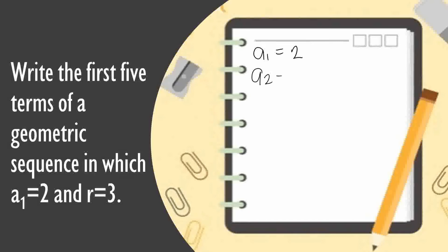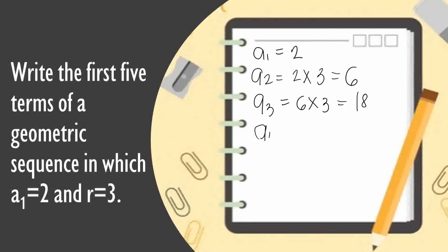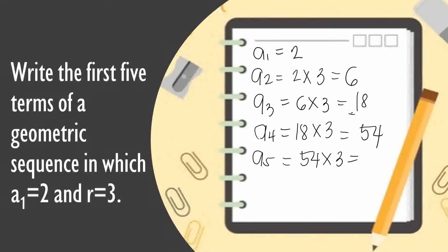So a sub 2 is equal to 2 times 3, which is 6. Then a sub 3, multiply the previous number 6 by 3, which equals 18. Then a sub 4, 18 times 3 equals 54. And a sub 5, 54 times 3 equals 162. So these are the first 5 terms of the geometric sequence with a sub 1 equal to 2 and common ratio 3.